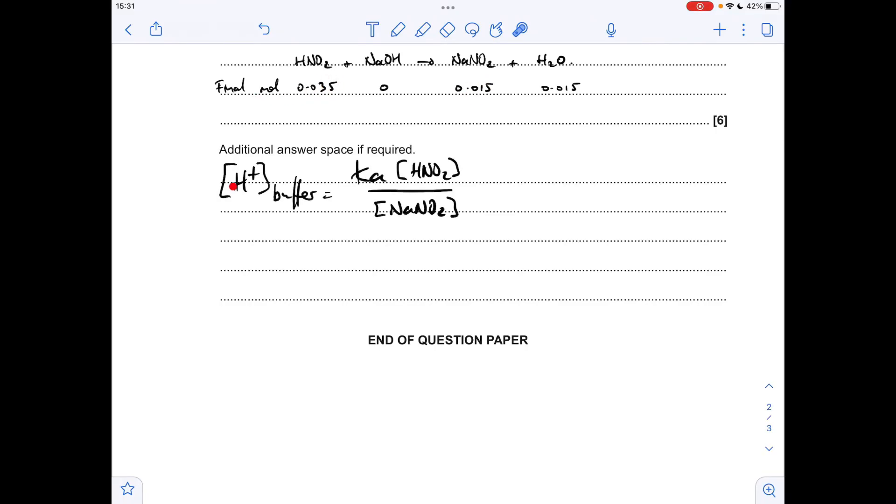So we're going to bring in the Henderson-Hasselbalch expression, so the H+ concentration of the buffer is equal to the Ka of the weak acid multiplied by the acid concentration divided by the salt concentration. Putting the numbers in, we weren't given the Ka value, we were given the pKa value, so I've just put 10 to the minus pKa, so that is effectively the Ka, or you could calculate it and put it in there.